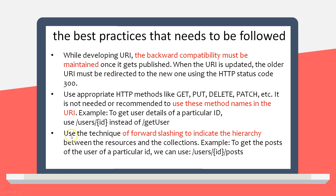Next: use forward slashes to indicate the hierarchy between resources and collections. For example, for Facebook users, to fetch a particular post, the endpoint would look like '/users/{id}/posts' to get all posts. If looking for a specific post, use '/users/{id}/posts/{postId}'. It's a good practice to use forward slashing to indicate resource hierarchy.